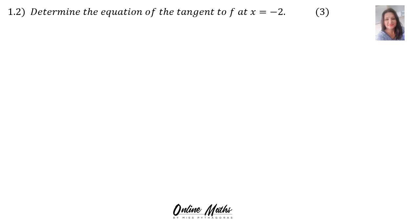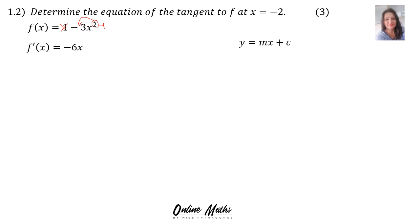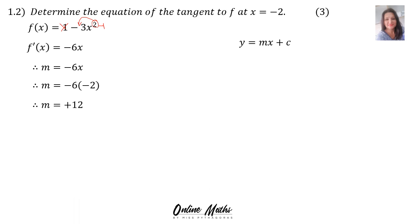Question 1.2 says: determine the equation of the tangent to f at x equals negative 2. We are working towards y equals mx plus c. We will start with the function and find the derivative, which is minus 6x, since the derivative of a constant is 0 and the power 2 comes to the front giving minus 6x. Remember, the derivative means the gradient of the tangent, and the point is x equals negative 2. Therefore, substituting negative 2 into the gradient: negative 6 times negative 2 is 12. That's the gradient.